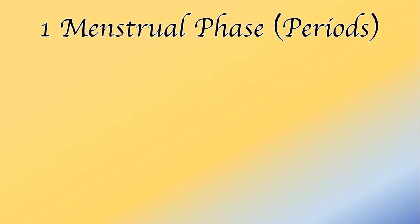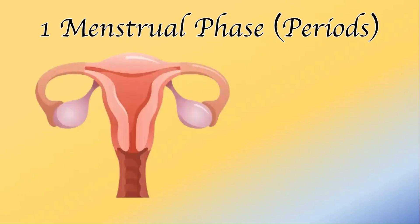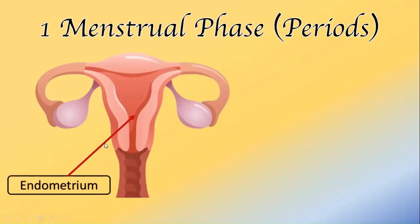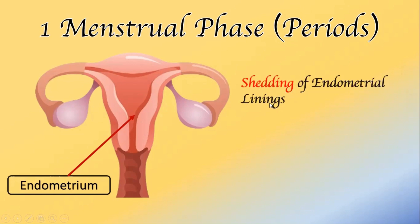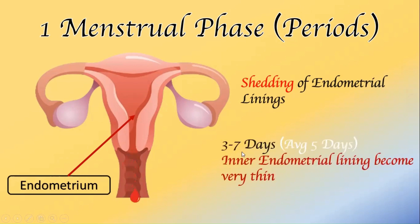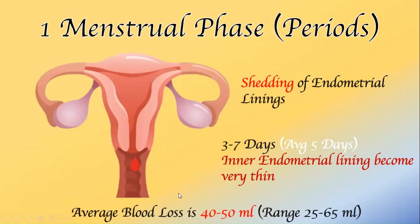The first phase is the menstrual phase, also known as periods. During this phase, changes are observed in the uterus. Within the uterus there is a thin lining named the endometrium, and during this phase there is a shedding of the endometrial lining, making the inner layer of the uterus very thin. This phase generally lasts between three to seven days, with an average of five days, and the average blood loss is between 40 ml to 50 ml.